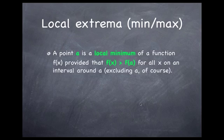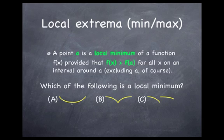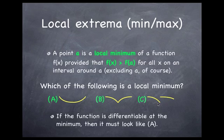So what is an extremum? A point x equal a is a local minimum of f of x if the value of the function is greater than f of a everywhere in a neighborhood around a. Which of the following would you consider a minimum? You'll notice all of these have the property that right at the low point, everywhere nearby the function has higher values. In one case the function is differentiable, in another it's not differentiable, and in the third case it's not even continuous. All of these count as local minima even though the derivative is not defined. When the derivative is defined at the minimum, then it must look like the differentiable case, and that's the case we'll talk about in the next few slides.